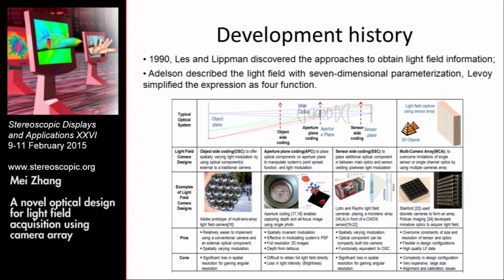Here I list some examples of light field camera design. Some researchers placed special optical elements in different positions of a typical optical system and used a single sensor. But this kind of system has disadvantages such as low resolution and small disparity. Other researchers proposed light field capture with a sensor array, which can overcome constraints of size and resolution of the sensor.